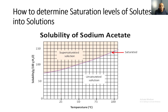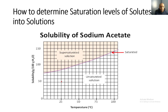Let's try another example: 50 grams of sodium acetate at 25 degrees Celsius. When I plot this point, it is below the saturation line for sodium acetate, which tells us that this is an unsaturated solution. And if a point lands right on the line, that would indicate a saturated solution.